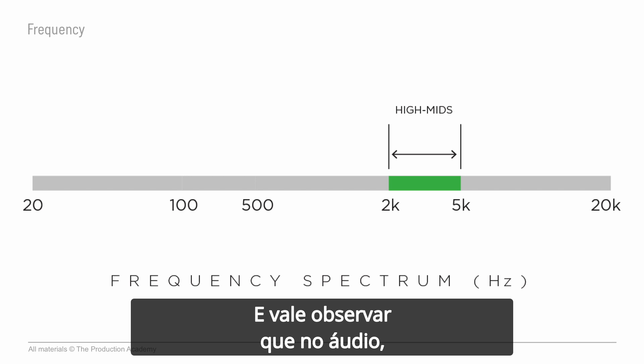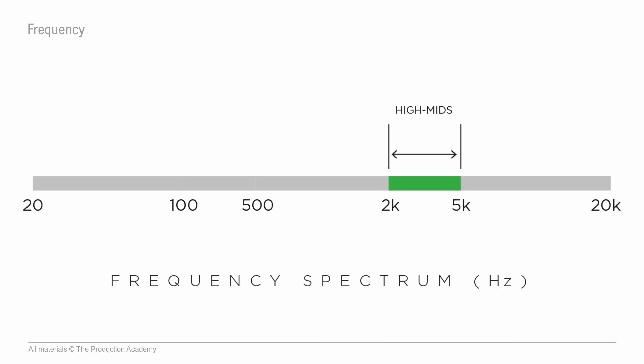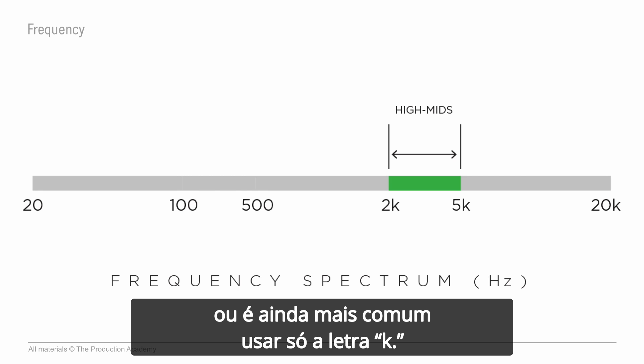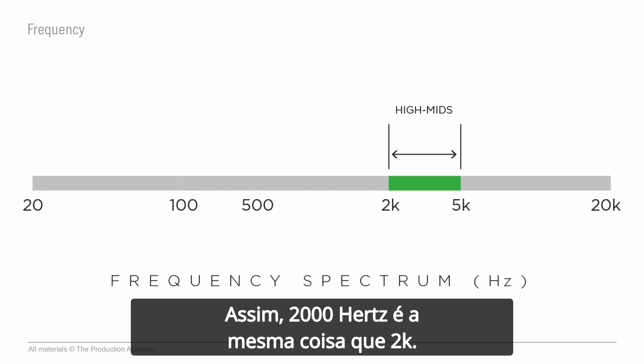And one thing to note: in audio terms, when frequencies enter the thousands of hertz, they are shortened to kilohertz, or most often to just "k." So 2000 hertz is the same as 2k.